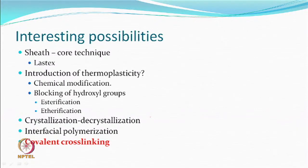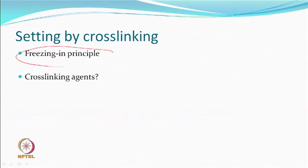Cotton and cellulose attracted so much attention that many methods have been tried, given that this is not a thermoplastic material. Finally, covalent cross-linking was attempted — making covalent cross-links between molecules rather than breaking or adding things. This employs the principle of freezing in. This could be done with multifilaments, viscose, cotton, staple fibres, wool, or silk — any material where a covalent cross-link can be produced. A covalent cross-link is much stronger than any hydrogen bond, so the effect obtained will be permanent.